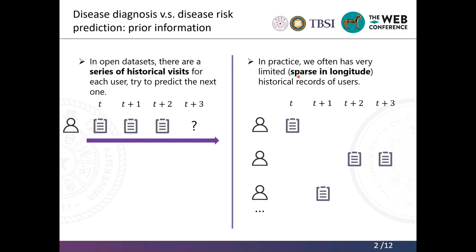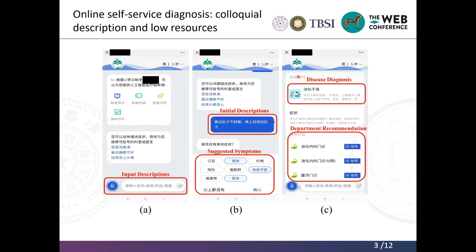We call this sparse in longitude. In this situation, time-series or series-based prediction methods are no longer applicable and cannot deal with this sparsity in the dataset. Our online self-service diagnosis confronts another problem: the colloquial description and low resources. We have this mini program deployed in WeChat, where users tend to input descriptions of their symptoms. This initial description is usually a very short sentence with very low resource, and if we directly apply our method to make predictions based on this initial description, it might get very inaccurate results. Considering this challenge, we need to get suggested symptoms for the users to expand descriptions for a better diagnosis and department recommendation.